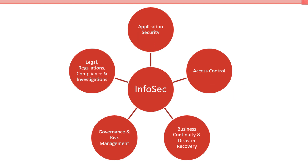The second one is access control, which can be physical or logical access control, and we're going to spend time talking about both in this course. In terms of people that deal with access control, there's physical access control personnel for an organization, and for logical access control that would be our system administrators, our network administrators — lots of different people play a role in access control.